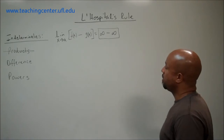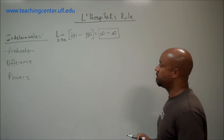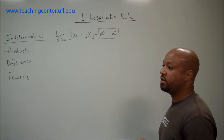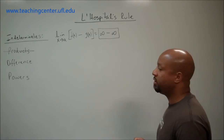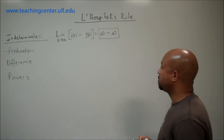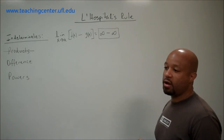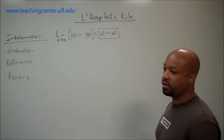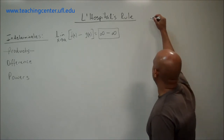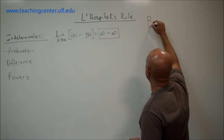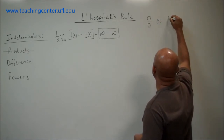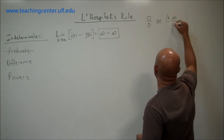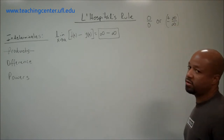If we see that we have an indeterminate difference form, just as we did with indeterminate products, it allows us the opportunity to rewrite the original limit in such a way that we get one of the fundamental indeterminate forms: 0 over 0, or plus or minus infinity over infinity.